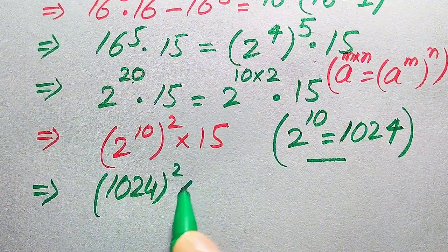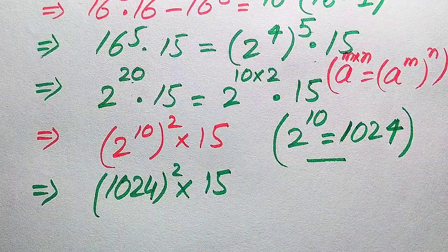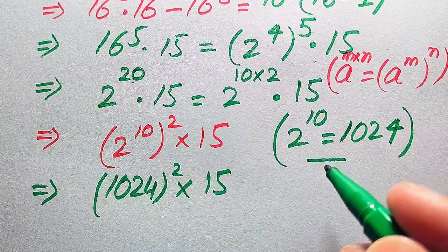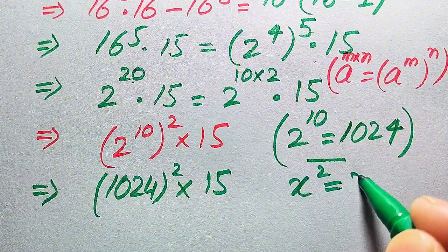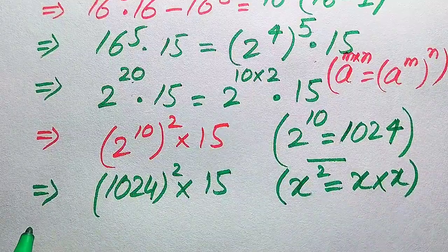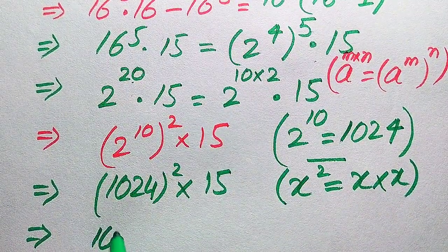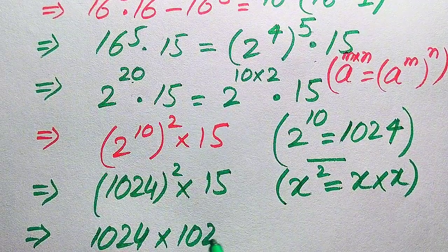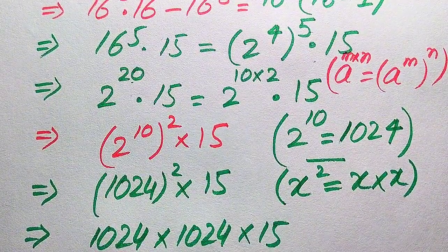We substitute this value, so we now have 1024 squared, multiplied by 15. Since x squared means x times x, we write this as 1024 multiplied by 1024, multiplied by 15.